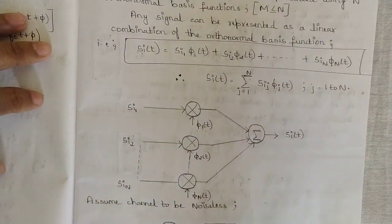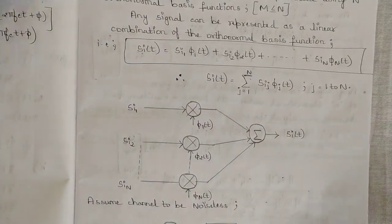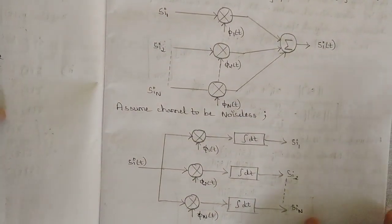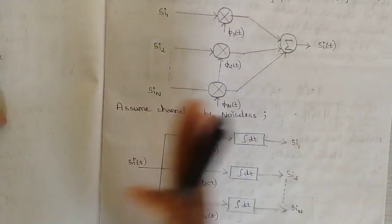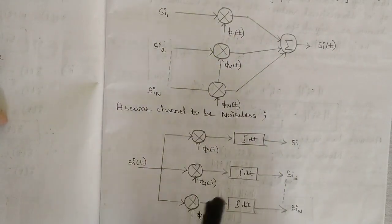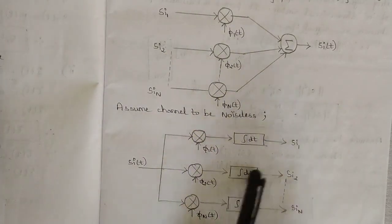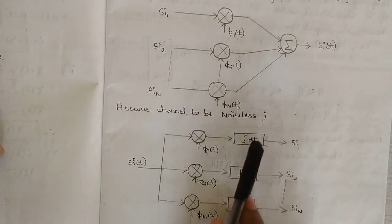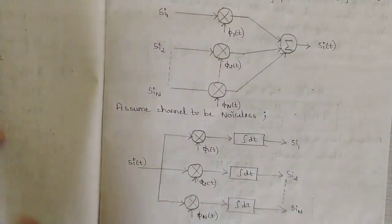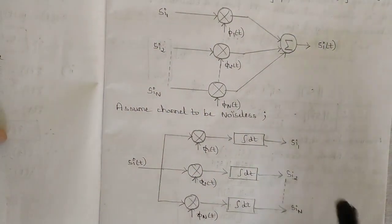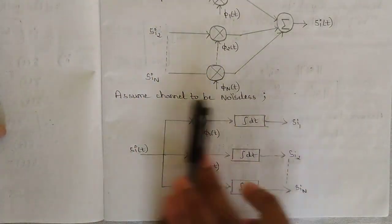To recover the energy signal components from s_I of t, we use the inverse process. In the noiseless channel, s_I of t is split and passed through integrator blocks along with phi_1 of t, phi_2 of t, up to phi_n of t. Passing through the integrator recovers the original energy signals s_I1, s_I2, up to s_In. This is the inverse process block diagram for geometric representation.